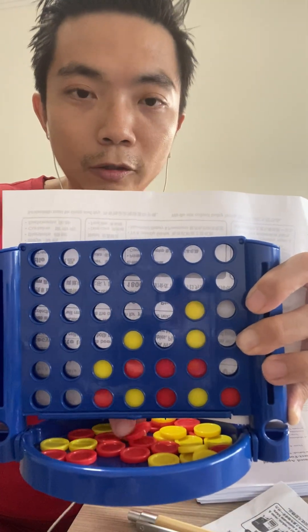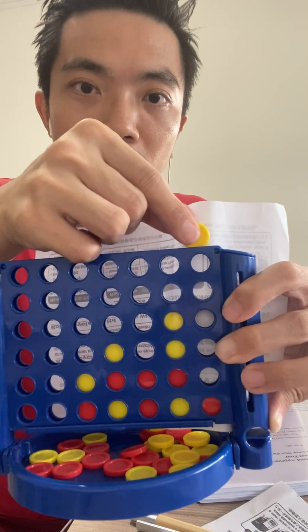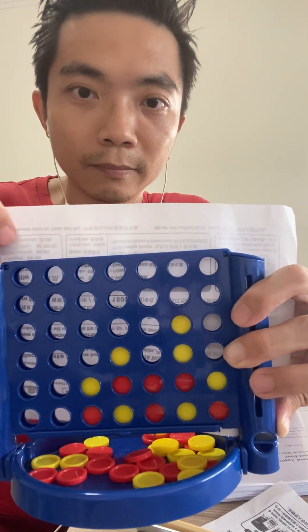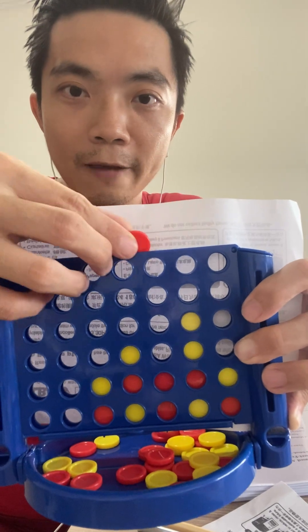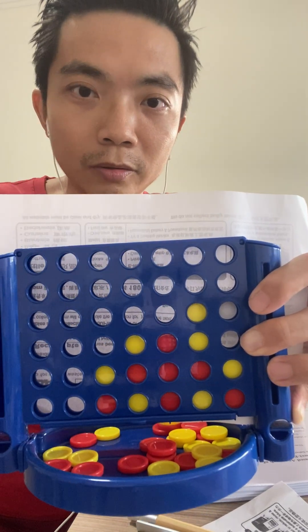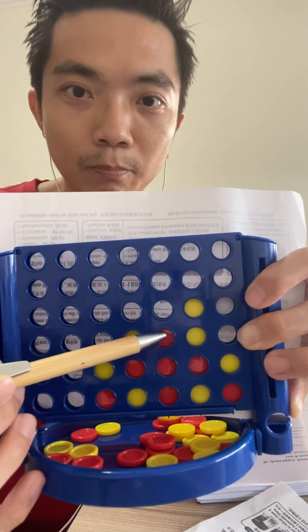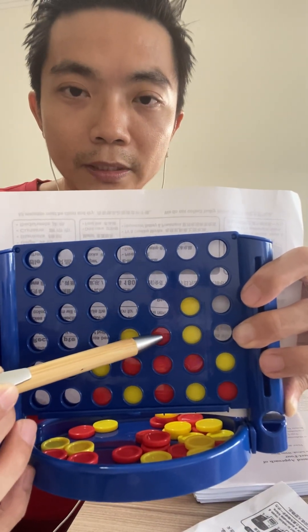So yellow player has no choice but to block the winning check over here, but to block either one of them which still creates a win for the red player. And me as the red player, I gladly create two winning checks by placing the red disc over here.